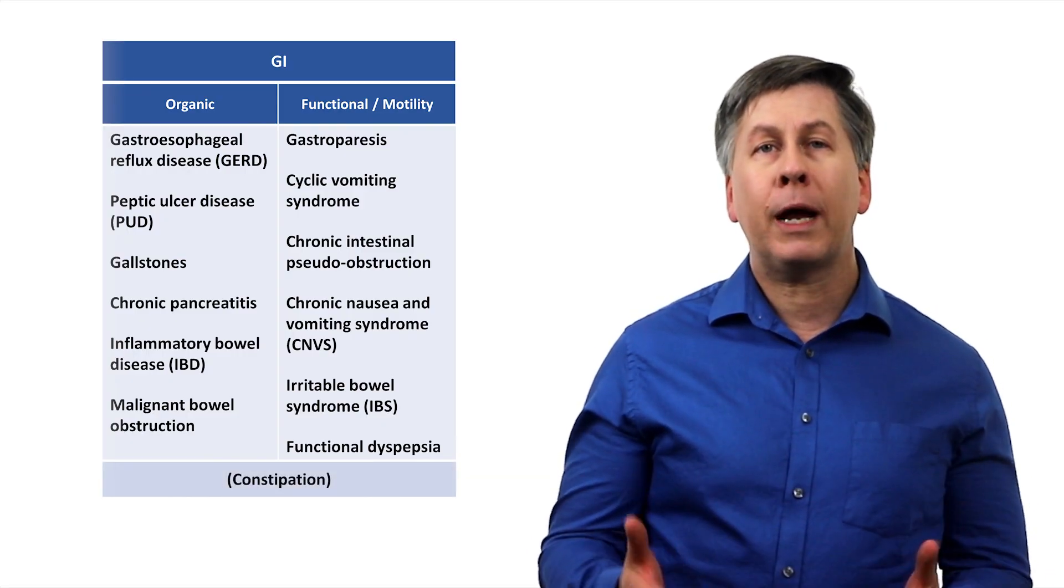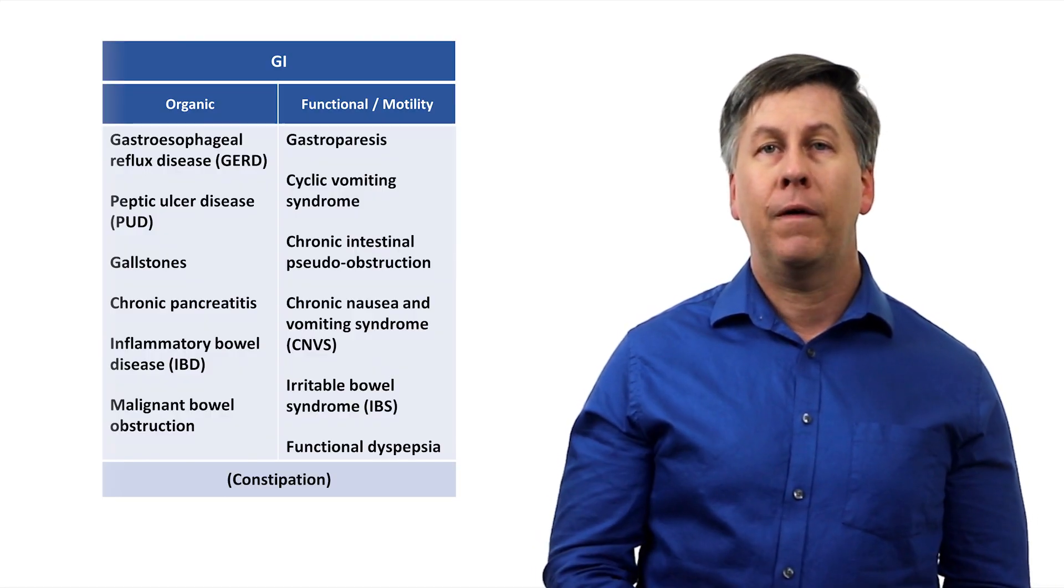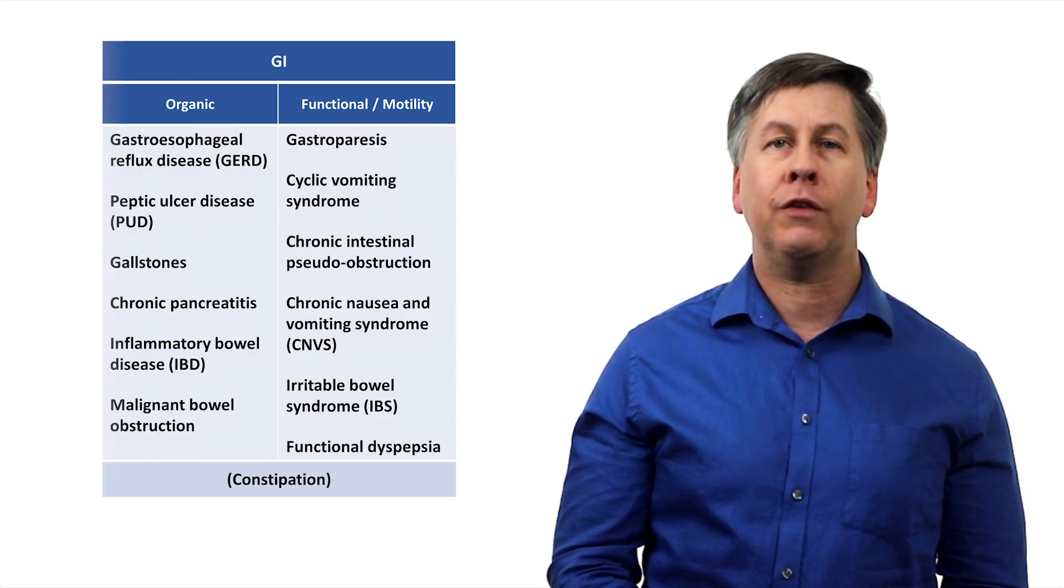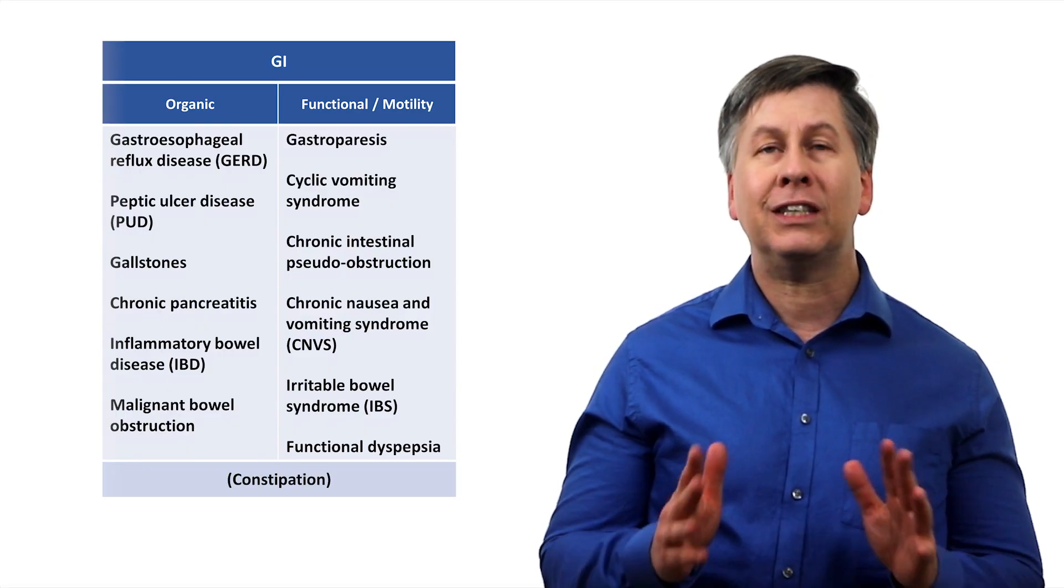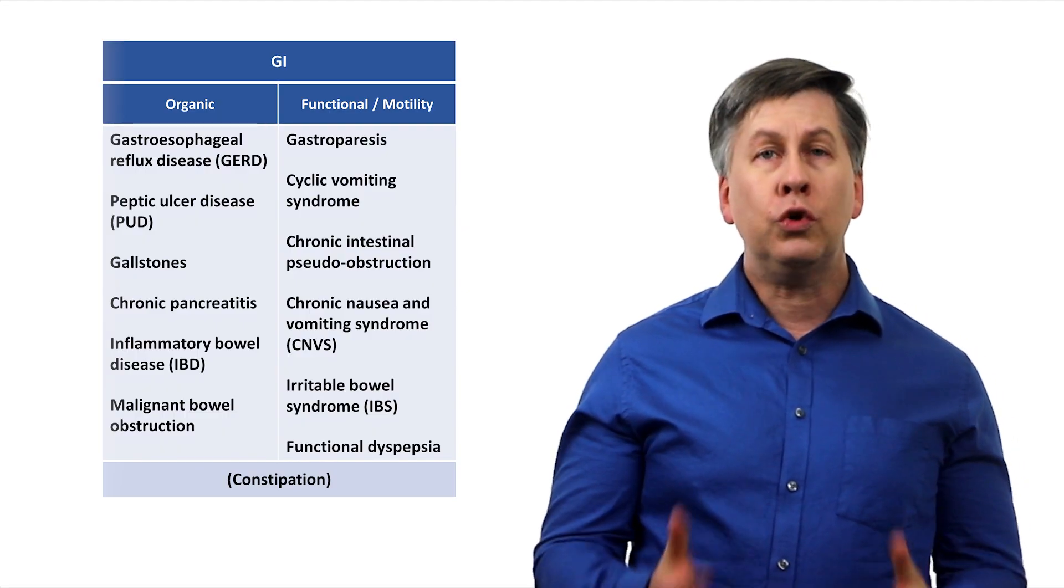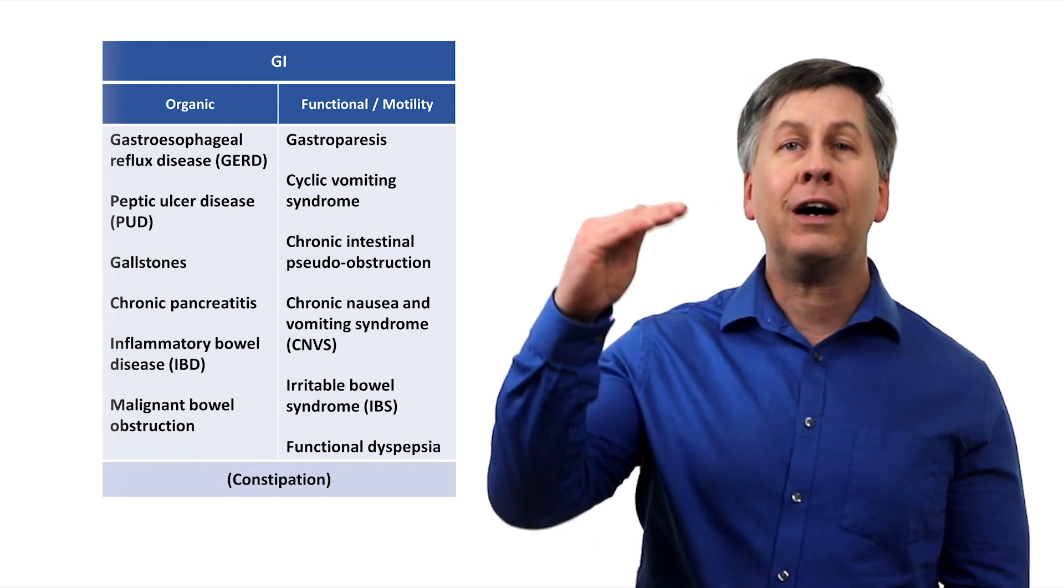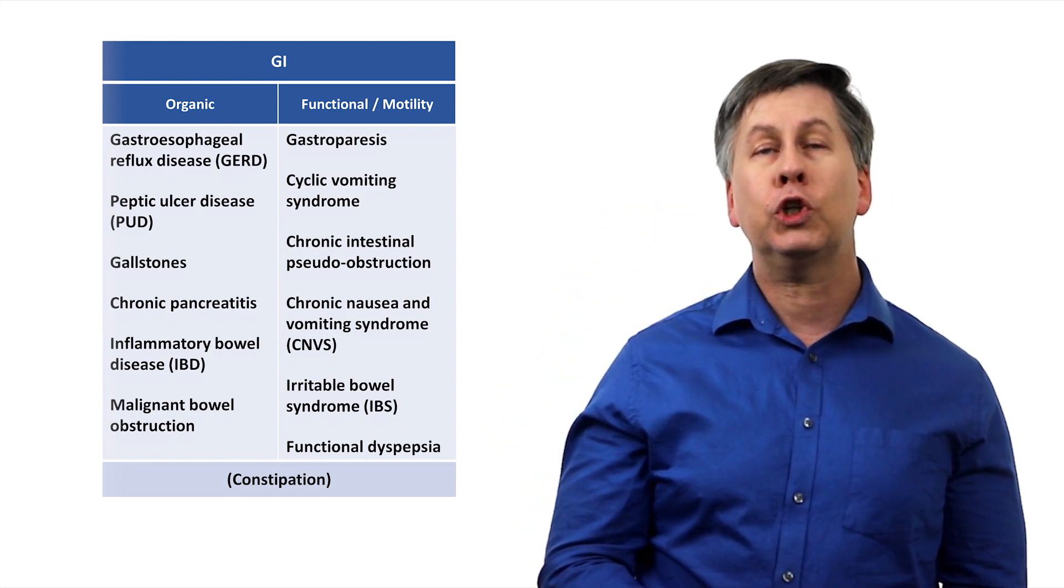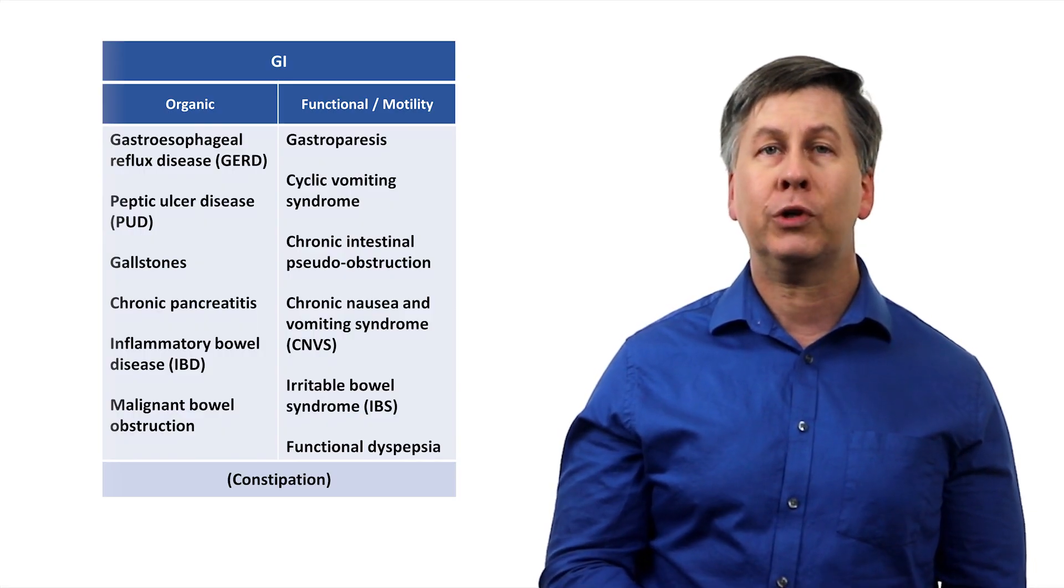Constipation is frequently claimed by laypersons and medical references intended for laypersons as a common cause of chronic nausea and vomiting, but its role as a direct cause is significantly exaggerated. When constipation and chronic nausea and vomiting do coexist, it is usually either coincidental or there is a higher-level pathology that is causing both, such as a GI malignancy, IBS, or chronic intestinal pseudo-obstruction.